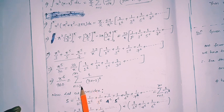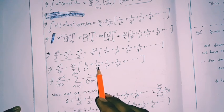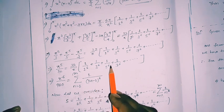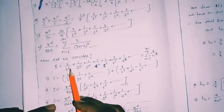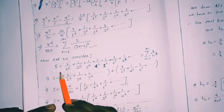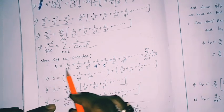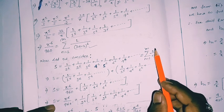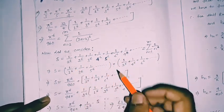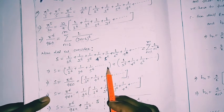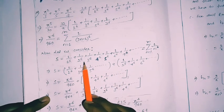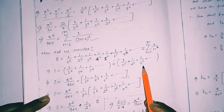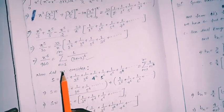The odd-term series can be written as Σ 1/(2n−1)⁶: putting n=1 gives 1/1⁶, n=2 gives 1/3⁶, n=3 gives 1/5⁶, and so on. Now consider the full series S = Σ_{n=1}^∞ 1/n⁶ = 1/1⁶ + 1/2⁶ + 1/3⁶ + ... We split it into odd-indexed and even-indexed terms.